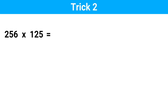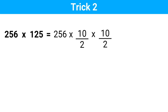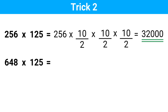Alright, let's say we have to multiply 256 by 125. So we can write this as 256 times (10/2) three times. Now we have to divide 256 by 2 three times: 256 divided by 2 is 128, half of 128 is 64, and half of 64 is 32. And we put three 0s at the end. This is the answer. Next one: 648 times 125. 648 divided by 2 is 324, half of 324 is 162, and half of 162 is 81 — put three 0s at the end. This trick will not be convenient at all times because dividing a number by 8 is not always easy, but it could be handy at certain times.